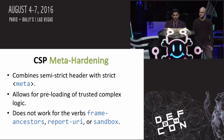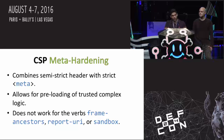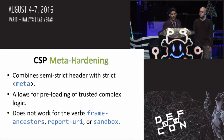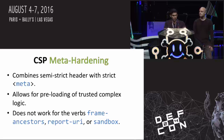Now let's move on to CSP — content security policy — and how you can combine interesting properties in CSP to do novel things. We've got something we're calling CSP meta hardening. What this is: you're combining a semi-strict header — one that doesn't have all the rules you want defined, but has leeway for you to do things that might otherwise be considered dangerous. This allows you to load trusted complex logic. Because it relies on meta headers, some directives don't work: frame-ancestors, report-uri, and sandbox won't work in meta headers.